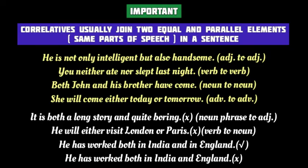In the first correct example, 'not only/but also' joins two adjectives: 'intelligent' and 'handsome.' In the second, 'neither/nor' joins the two verbs 'ate' and 'slept.' Next, 'both/and' joins the two nouns 'John' and 'his brother.' And in the last, 'either/or' joins the two adverbs 'today' and 'tomorrow.' However, incorrect usage includes 'both/and' joining a noun phrase and an adjective, 'either/or' joining a verb phrase and a noun, and omitting a repeated preposition after 'and,' all of which are grammatically incorrect.